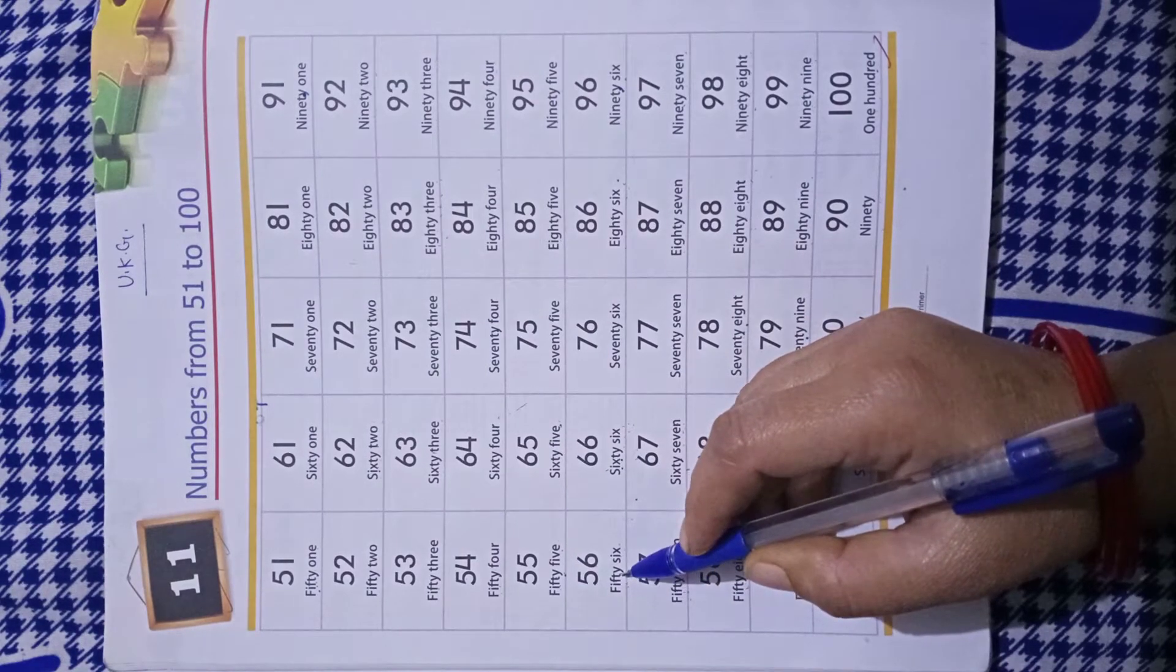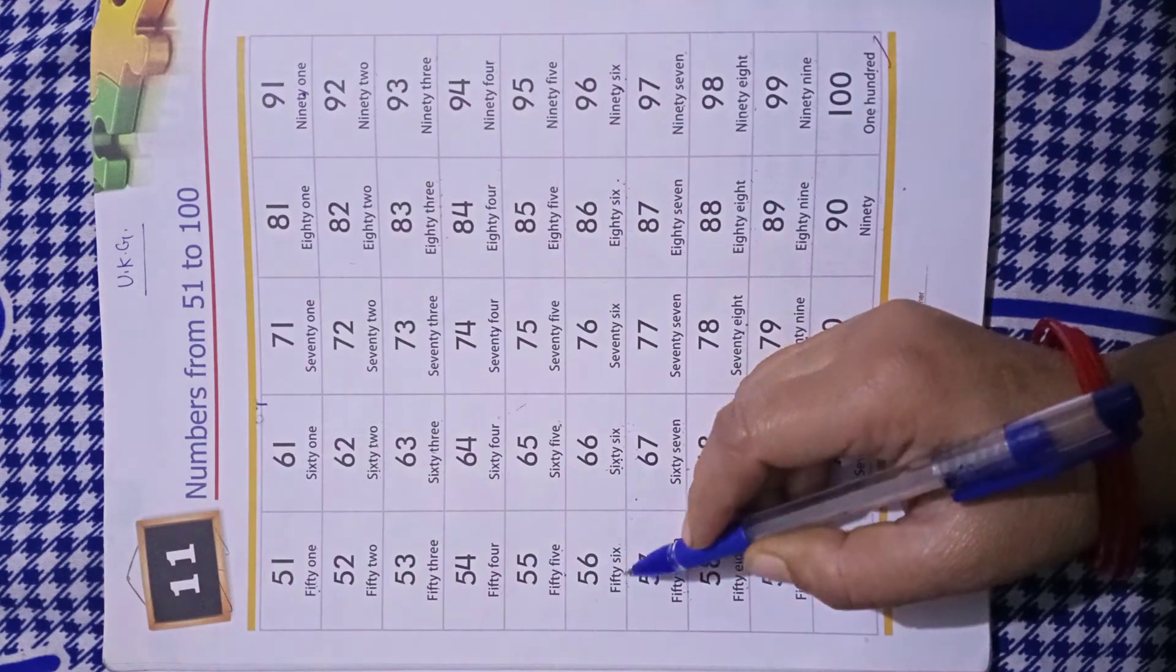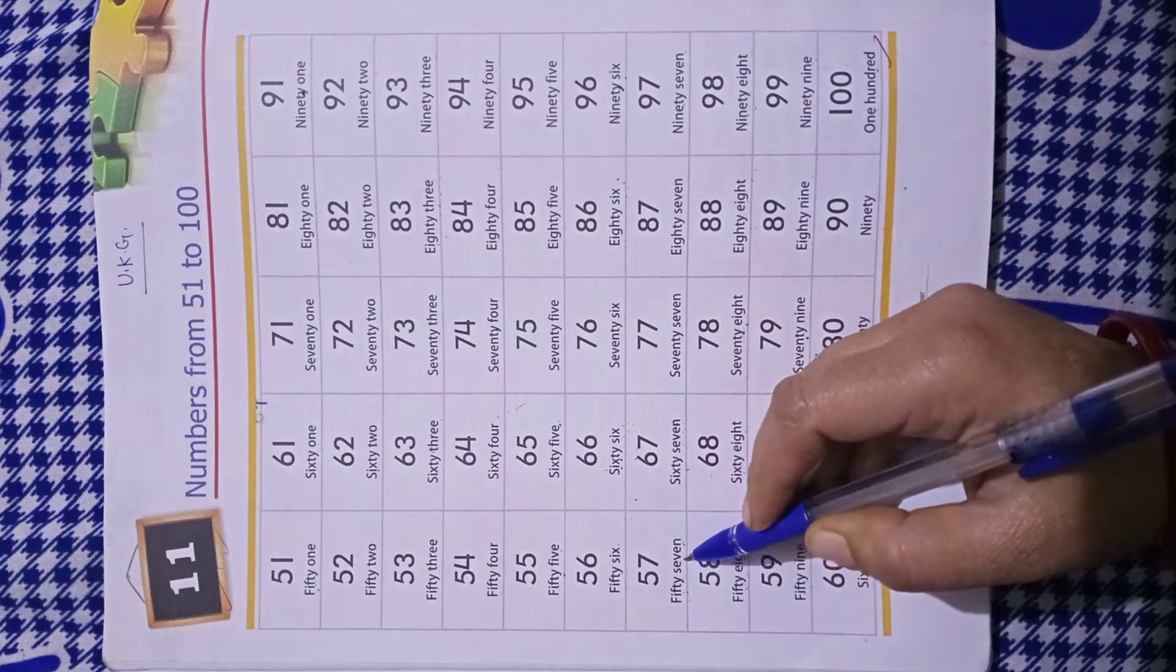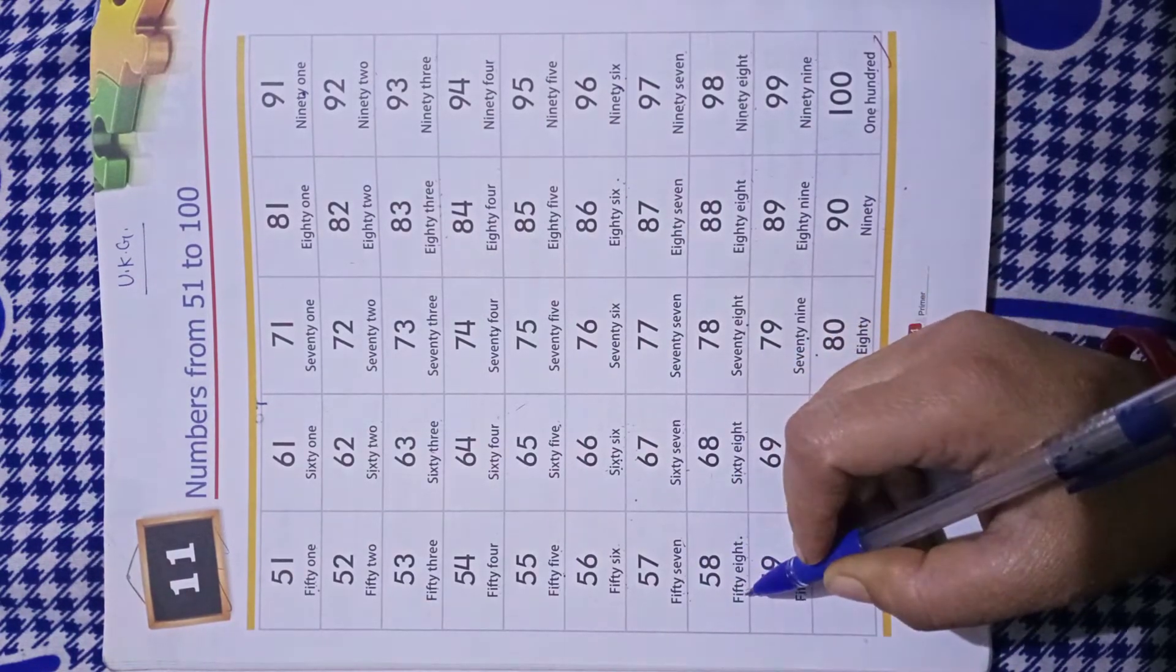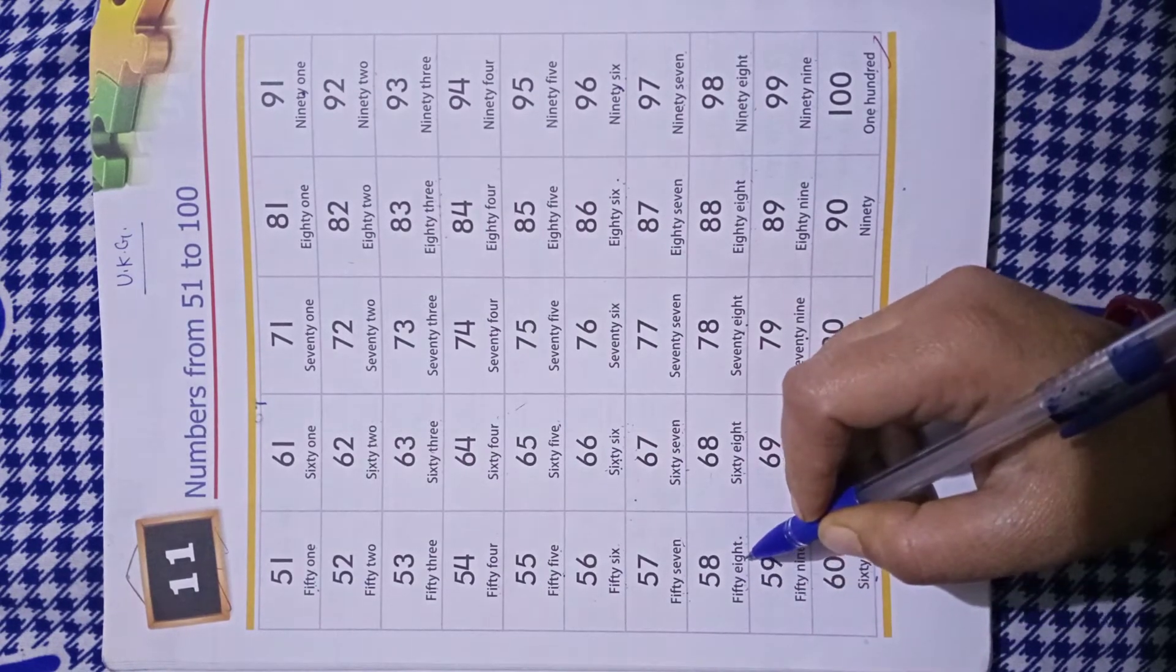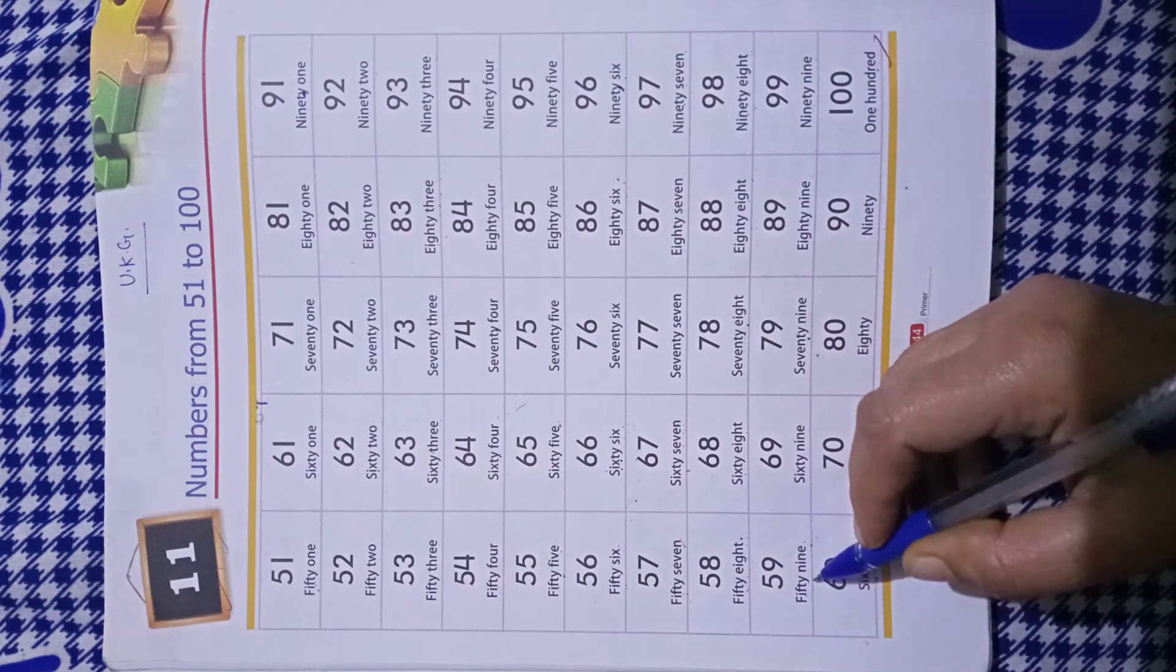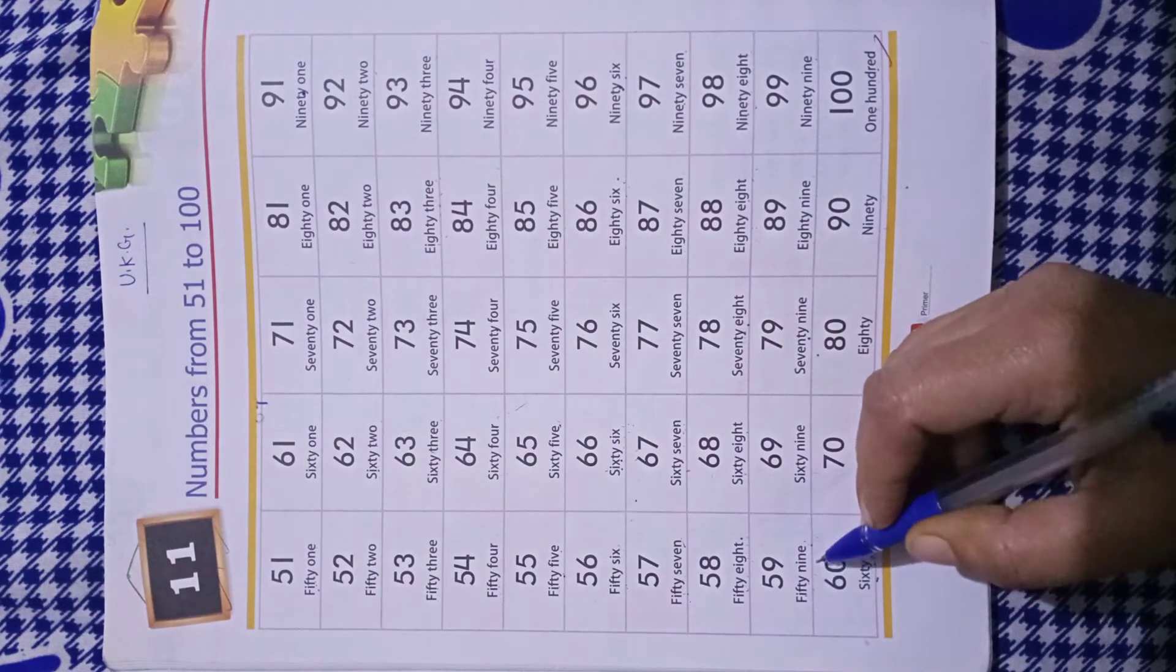FIFTY-50 SIX-6-56, FIFTY-50 SEVEN-7-57, FIFTY-50 EIGHT-8-58, FIFTY-50 NINE-9-59.